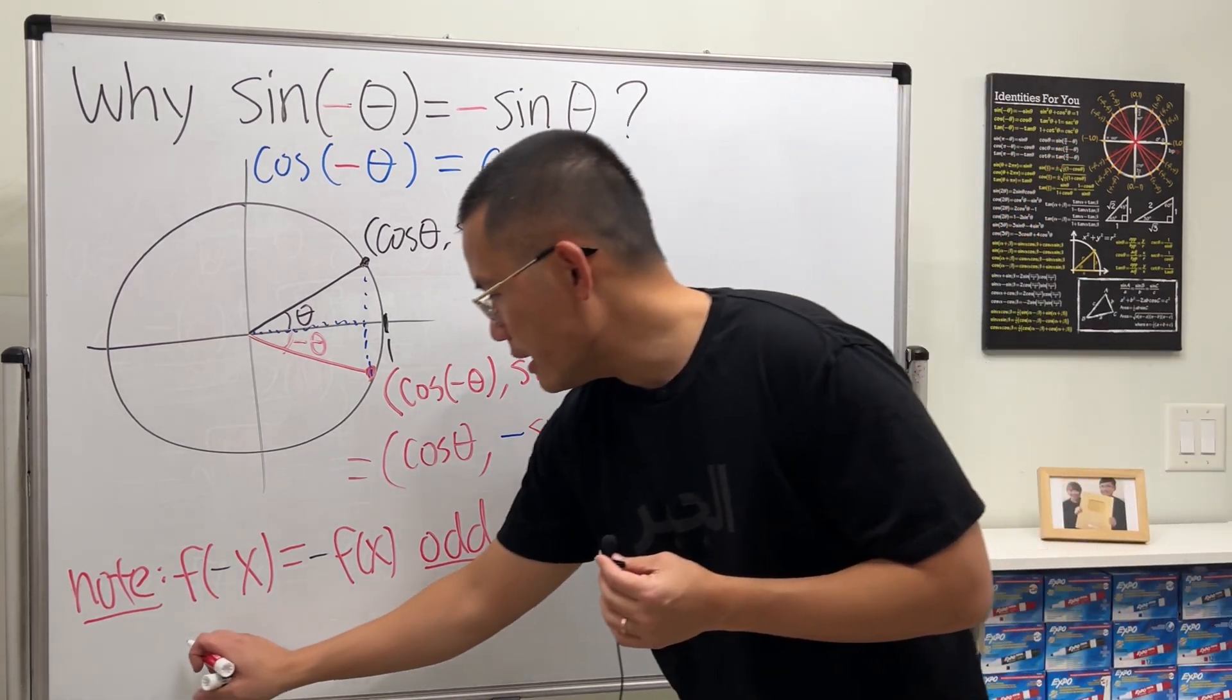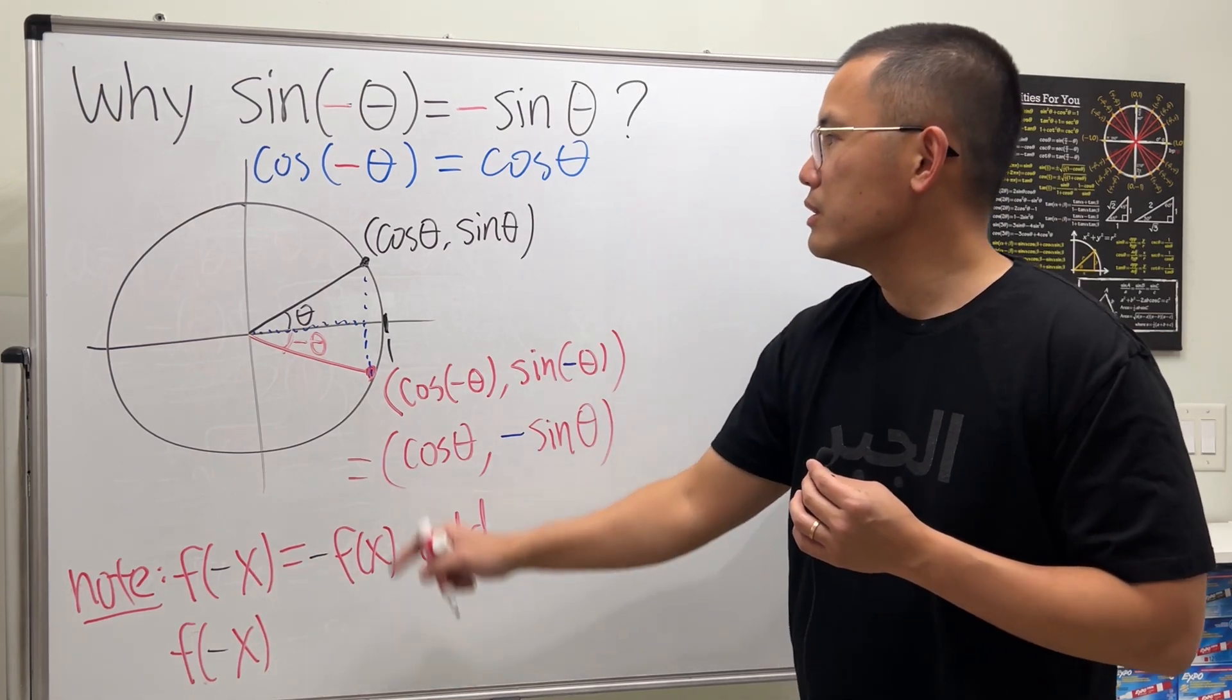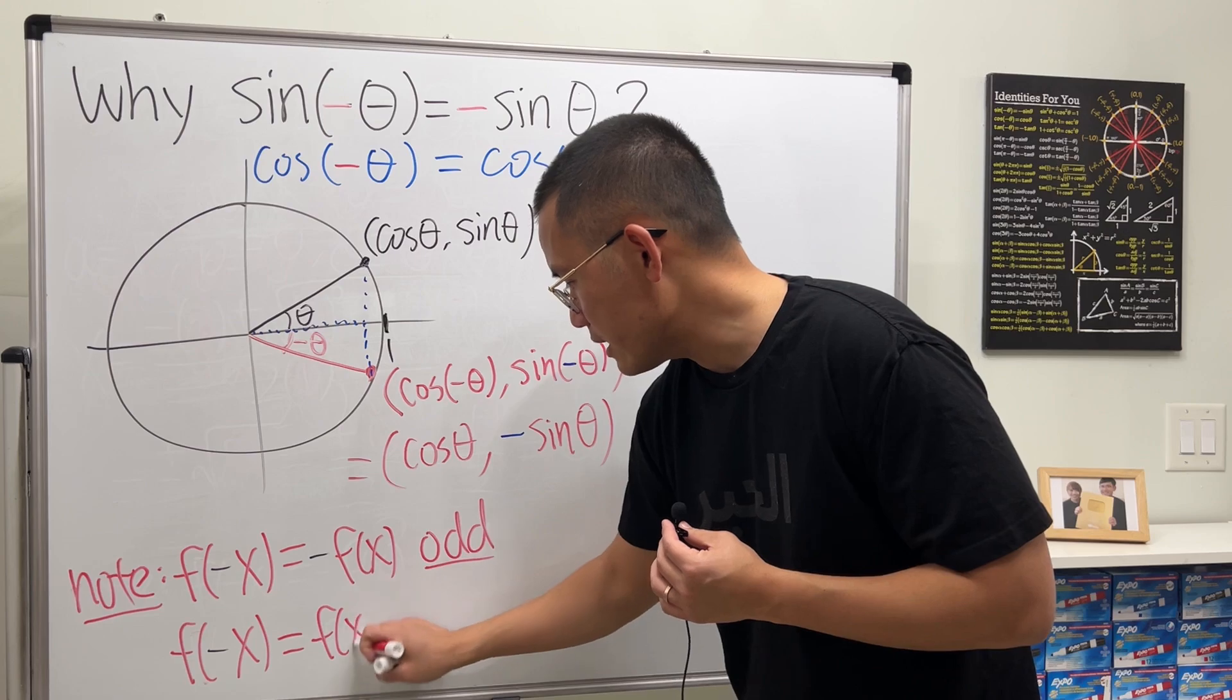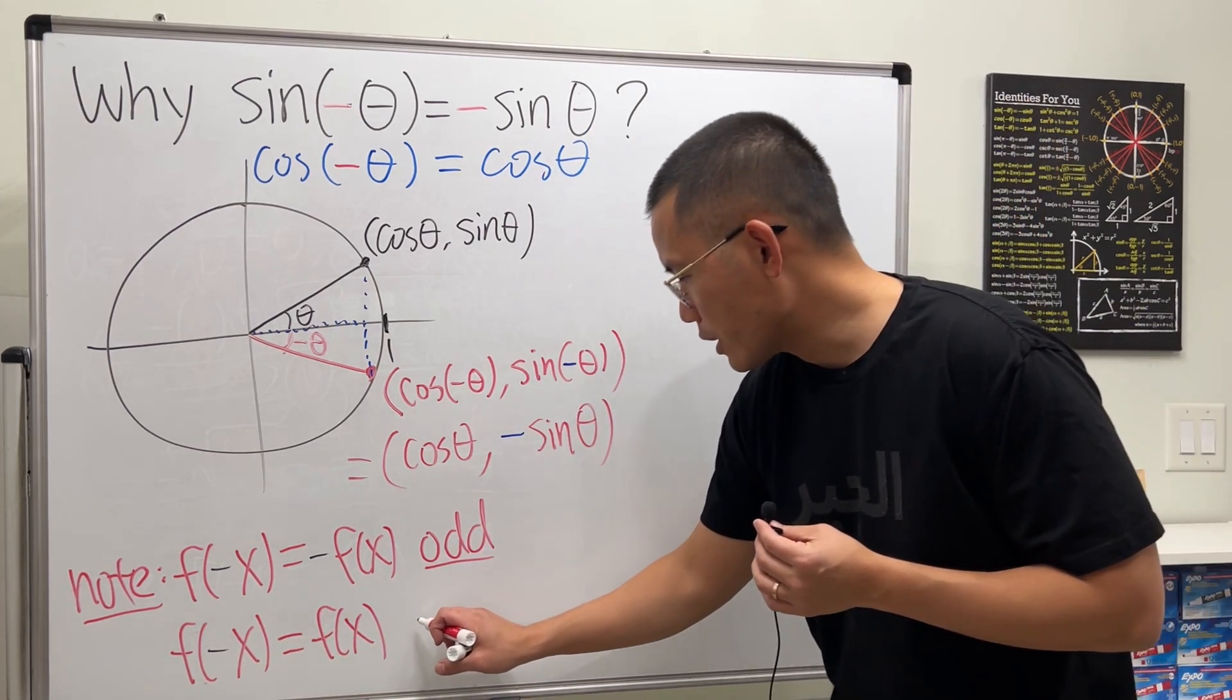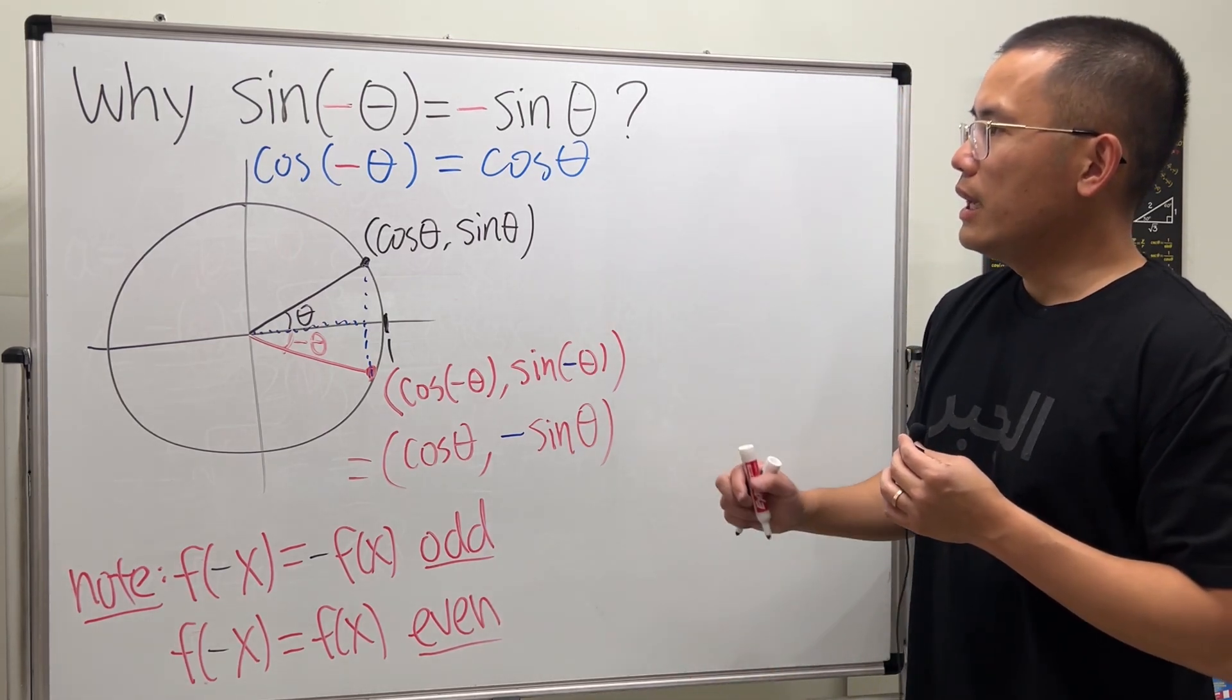And on the other hand, if we have f of negative x, if the negative doesn't matter, just like the cosine here, if we just get f of x back, if this is true for all x, then we call this an even function.